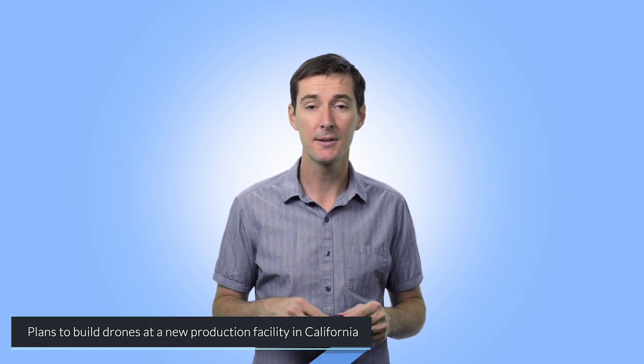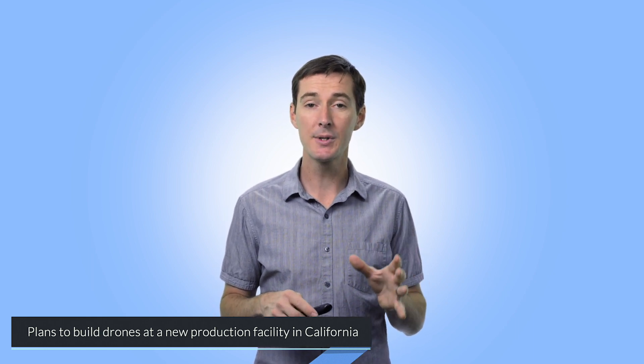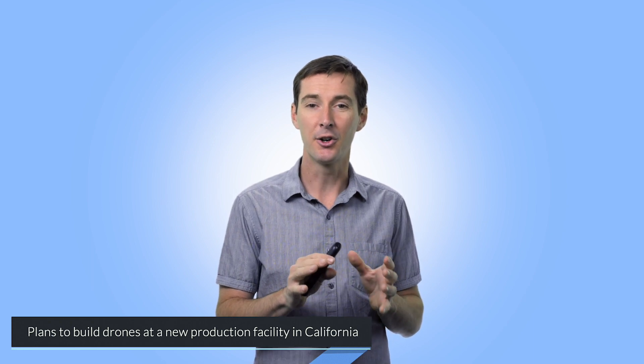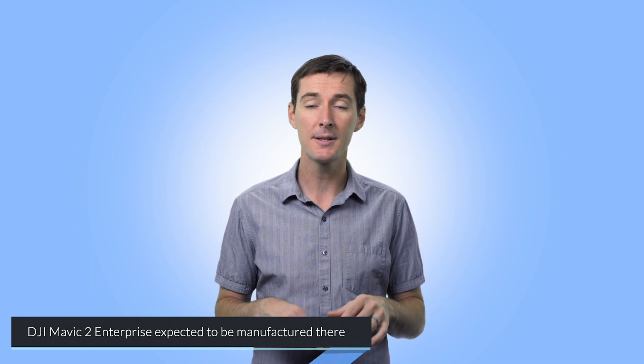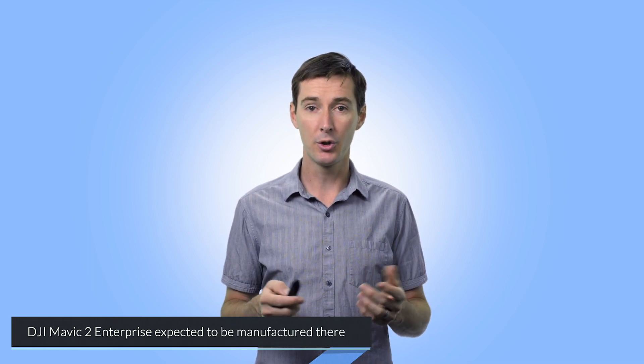The next piece of news is DJI is going to be manufacturing drones in California. They just announced plans to do this this week. The news came as DJI launched their government edition drones. I talked about this last week in the news update. It looks like they're manufacturing the Mavic 2 Enterprise in California. I think this is good news. I'm sure there are political or economical decisions behind it, but it's interesting. More jobs in the U.S., so that's a good thing.